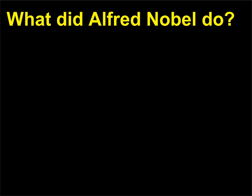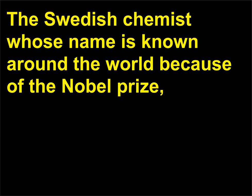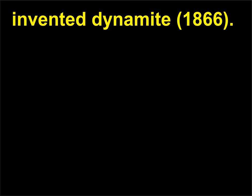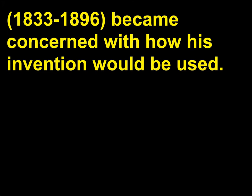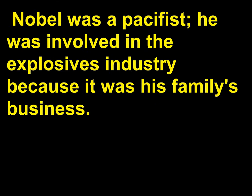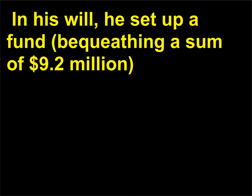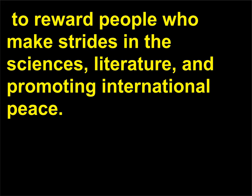What did Alfred Nobel do? The Swedish chemist whose name is known around the world because of the Nobel Prize invented dynamite in 1866. Even though dynamite improved the safety of explosives, Alfred Nobel, 1833–1896, became concerned with how his invention would be used. Nobel was a pacifist; he was involved in the explosives industry because it was his family's business. In his will, he set up a fund, bequeathing a sum of $9.2 million to reward people who make strides in the sciences, literature, and promoting international peace.